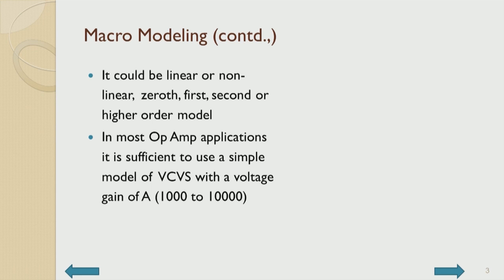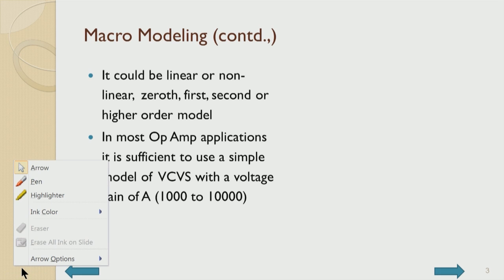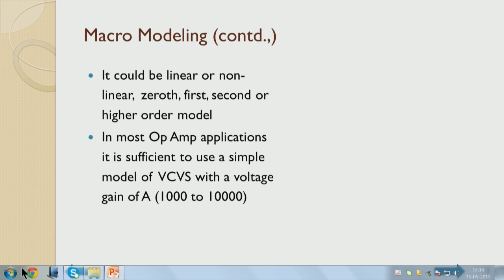In most op amp applications - meaning negative feedback applications - it is sufficient to use a model of VCVS with this kind of voltage gain. If an op amp uses 10 to 15 transistors and some resistors, and each device is modeled by its most complicated model including non-linearity and frequency dependence, the number of nodes in the whole system keeps increasing enormously. Particularly in VLSI systems this is the case. That micro-model level of modeling is to be used only at the end, after you understand each parameter of the active device influencing the system by bringing it in one at a time.